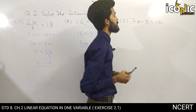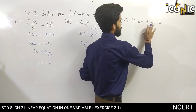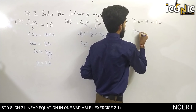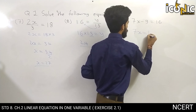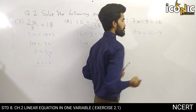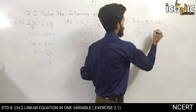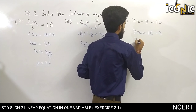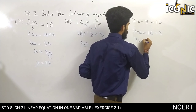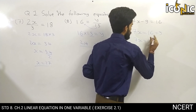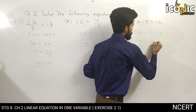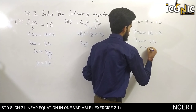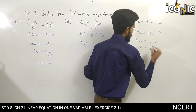Now in question 9: 7x minus 9 is equal to 16. We transpose minus 9 to the other side, so it becomes plus 9. Therefore 7x is equal to 16 plus 9, which is 25. So x is equal to 25 by 7.